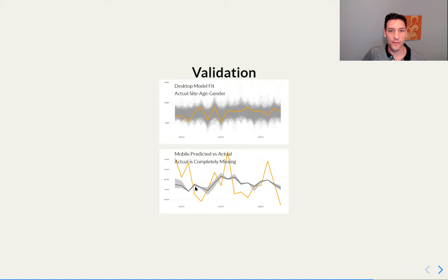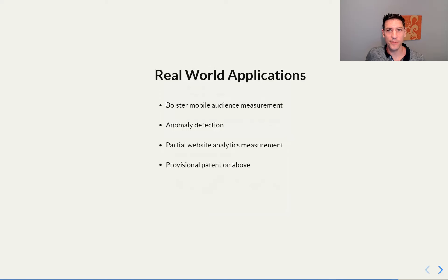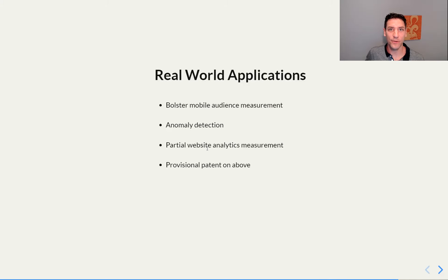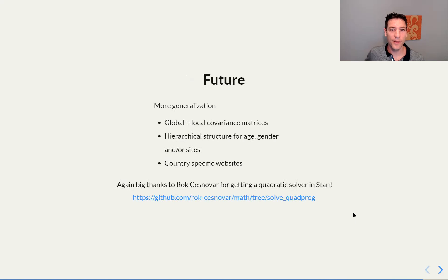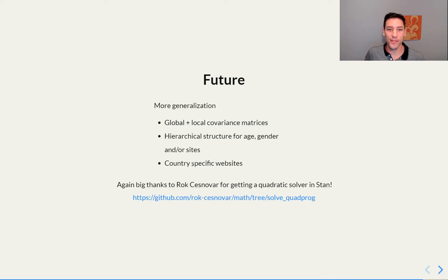Some real world applications are doing mobile audience measurement, anomaly detection, and partial website tags — where you have websites with tag information for part of the website but missing it for other parts, so this model could be used to measure that. There's a provisional patent on the above. In the future, we might want to generalize this using global and local covariance matrices, putting everything into the model such as age, gender, and site hierarchical structure — so instead of estimating each of these separately, that may improve things with more information. Also, with country-specific sites, instead of having donor countries, you could do it within a country and use other sites as donor sites for a country-specific site.